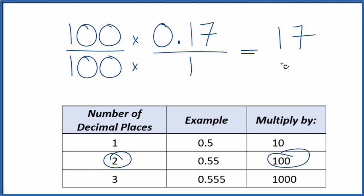100 times 1, that gives us 100. And we've converted the decimal 0.17 to a fraction, 17 over 100. If you divide 17 over 100, you'll get 0.17.